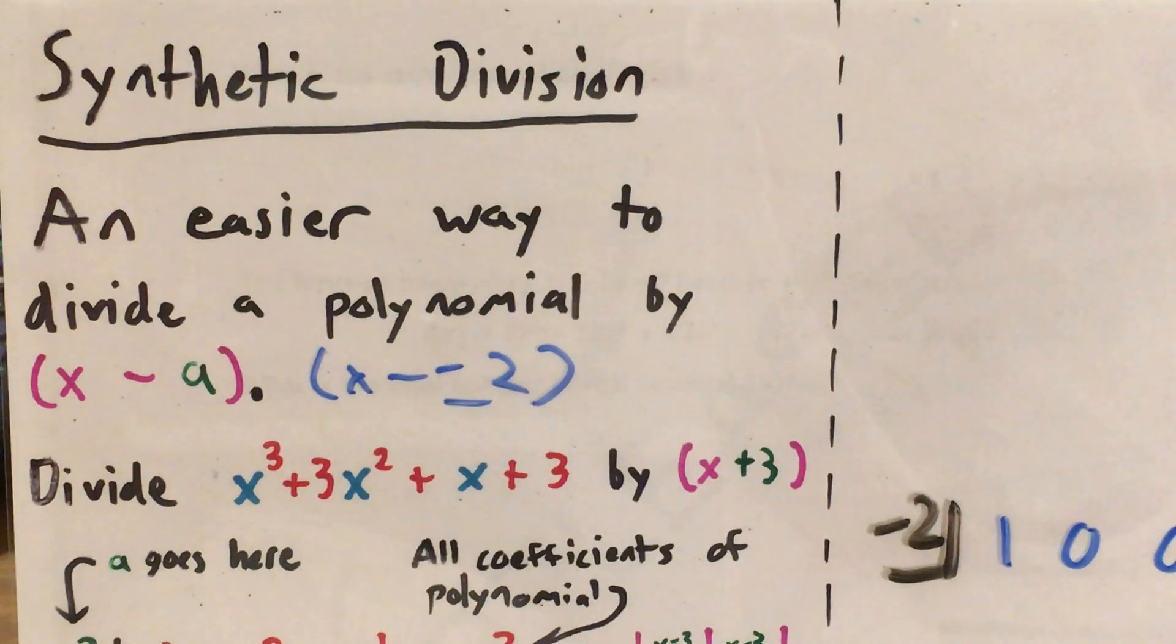And in this particular problem, it's not necessarily the easier way, but I'm going to show it here because it is an easy example of what synthetic division looks like.